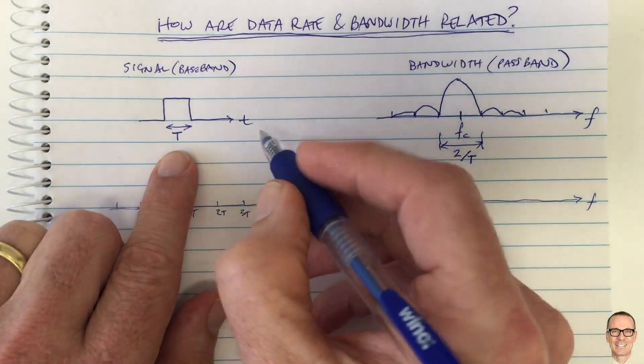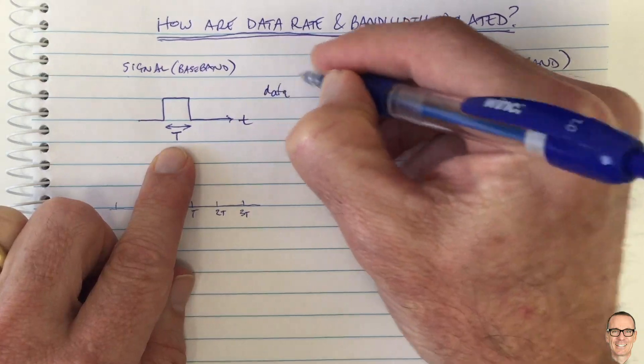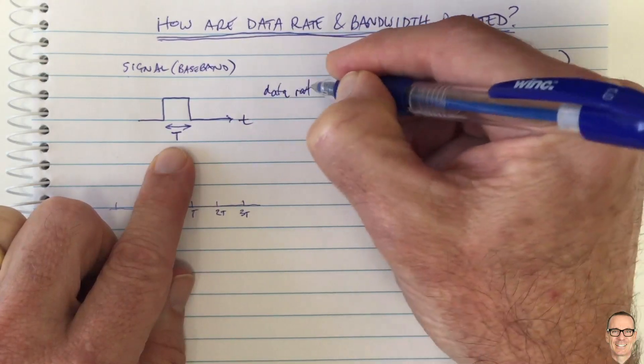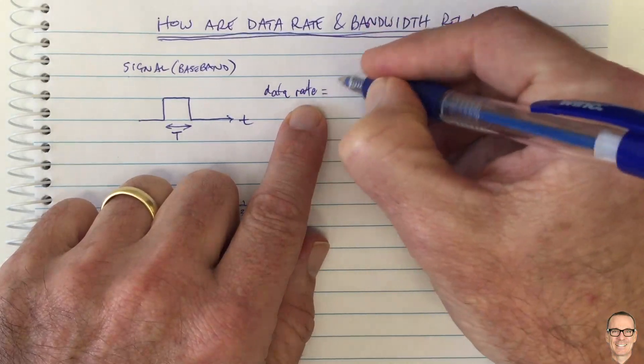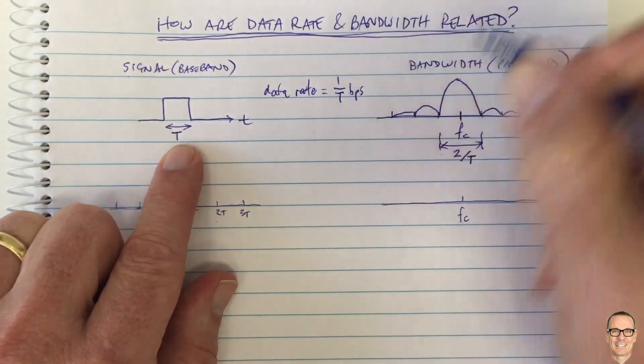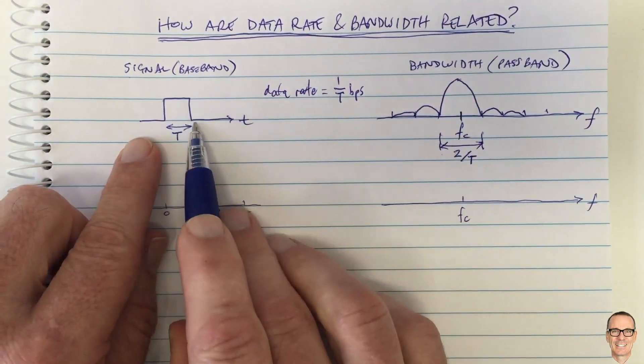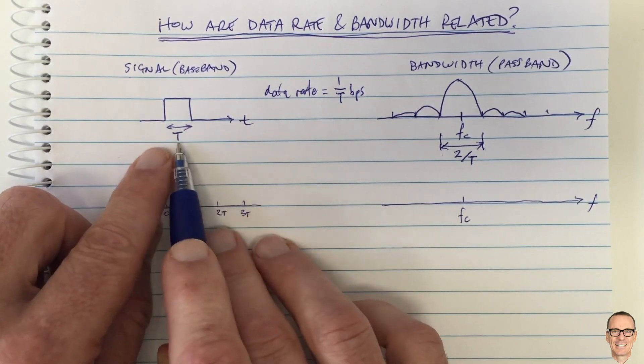For example, what is the data rate? Well, the data rate is the number of bits per second. This equals 1 divided by capital T in this case, bits per second, because we are sending one bit, it's either on or off, that's one bit in the time of capital T.